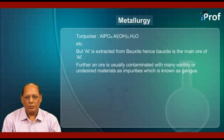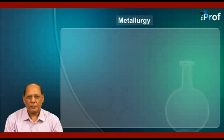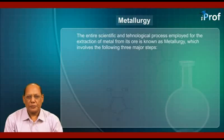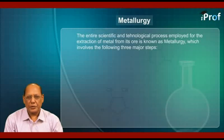An ore is usually contaminated with many earthly or undesired materials as impurities, which is known as gangue. The entire scientific and technological process employed for the extraction of metal from its ore is known as metallurgy, which involves the following three major steps.